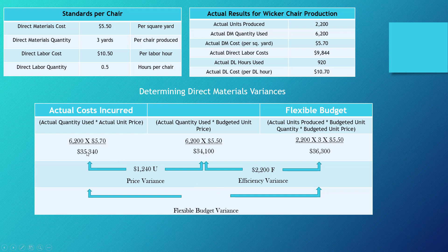The flex budget variance — the difference between what we actually paid and what we should have paid had we hit both standards — is $960 favorable. Our actual costs were $960 less for direct materials than budgeted. If you treat the unfavorable variance as positive and the favorable as negative and add them together, you get $960, confirming the two variances sum to the flex budget variance. Direct materials were cheaper than expected not because we paid less per yard, but because we used far less wicker than anticipated — a very favorable efficiency variance.